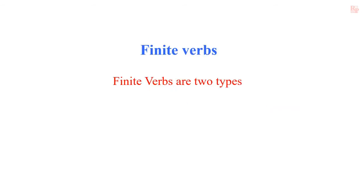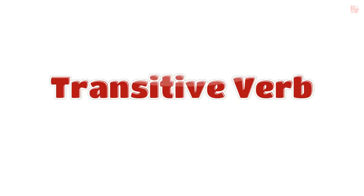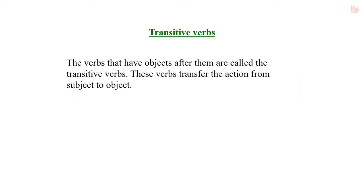These finite verbs are two types: transitive verb and intransitive verb. Let us discuss one by one. First of all, transitive verb. The verbs that have objects after them are called transitive verbs. These verbs transfer the action from subject to object.